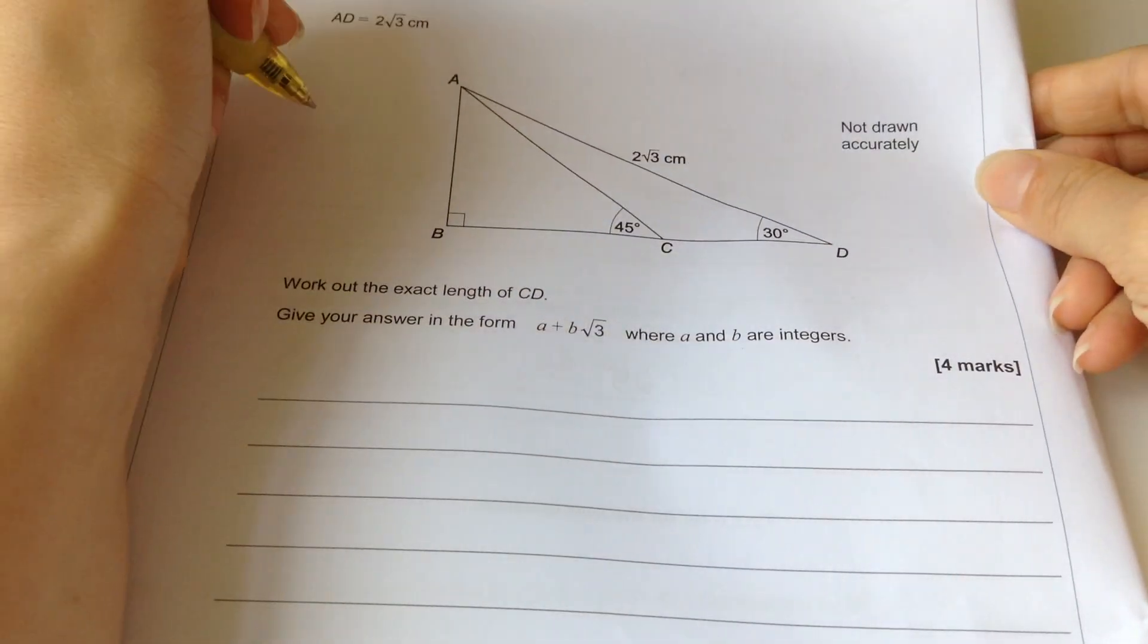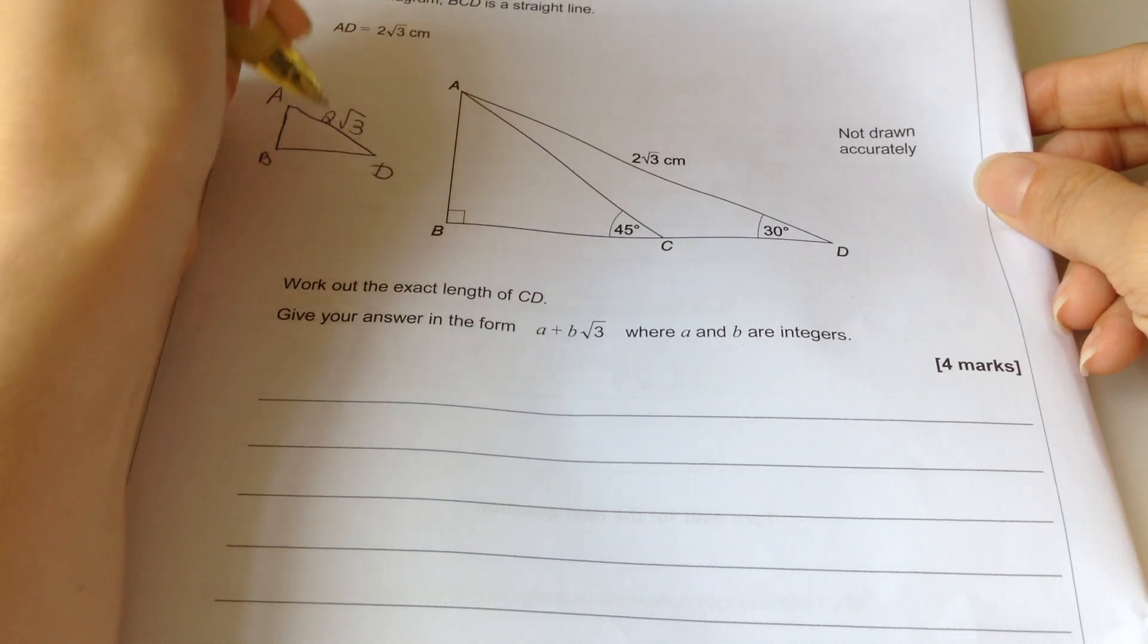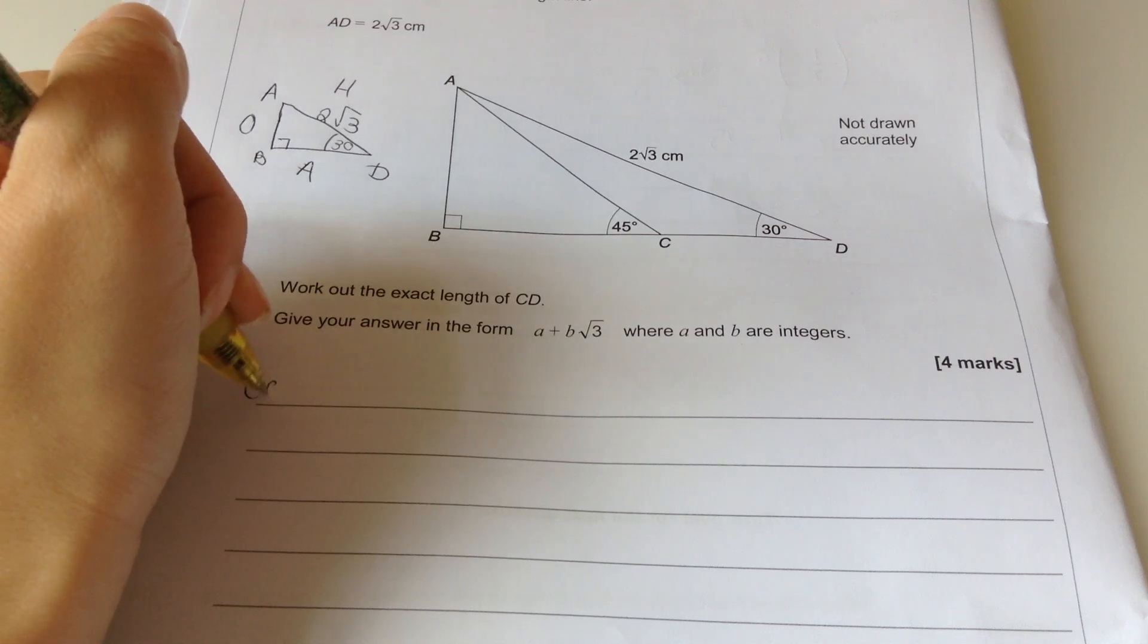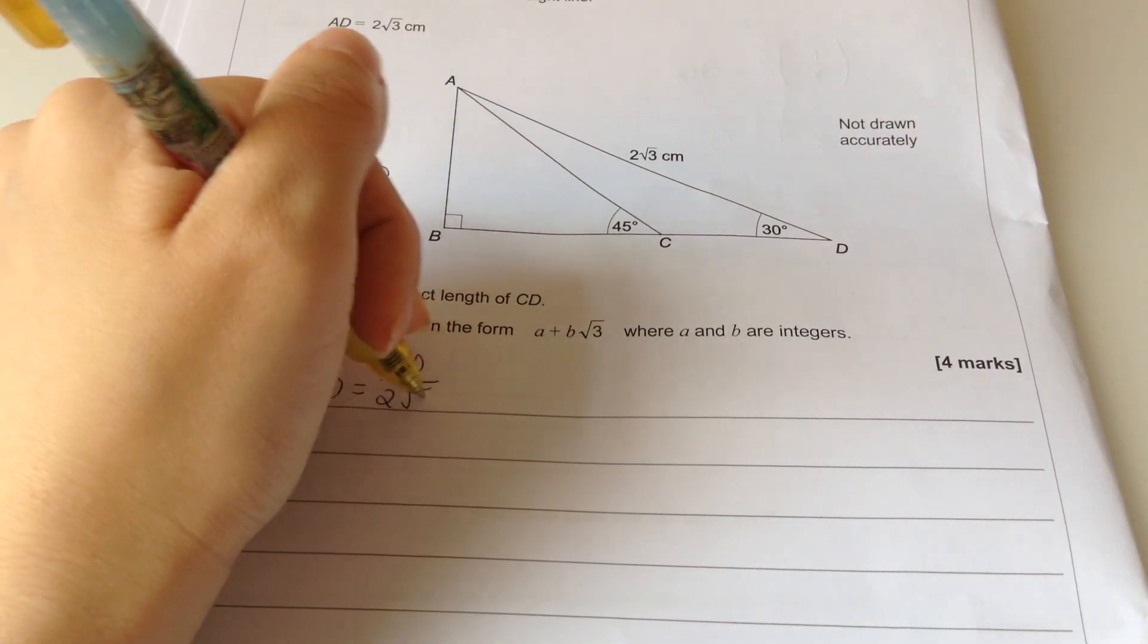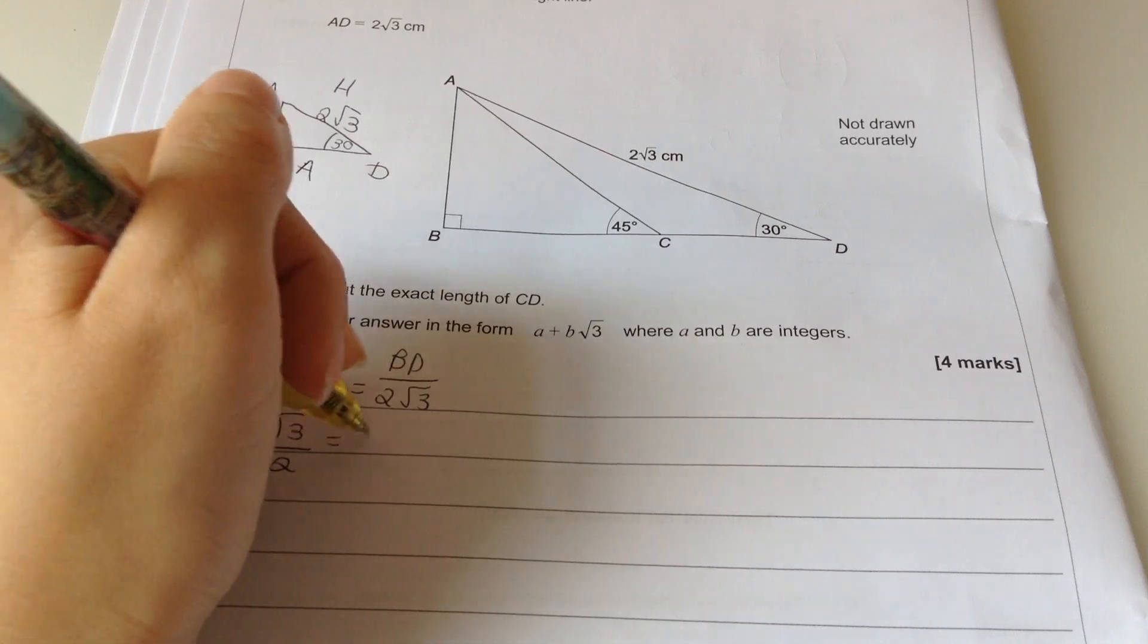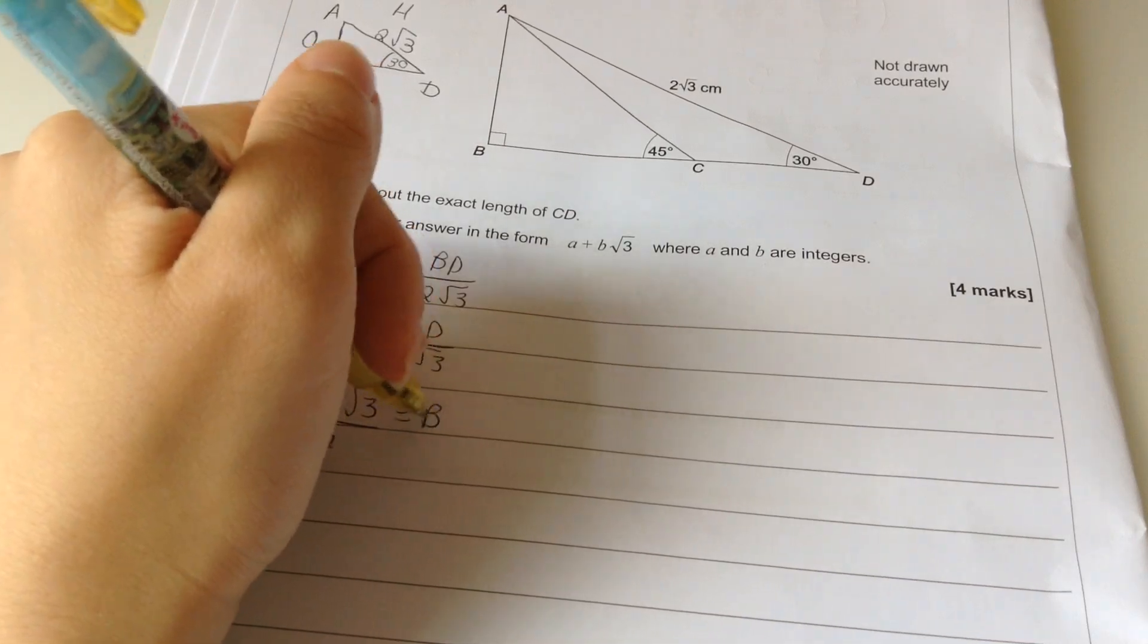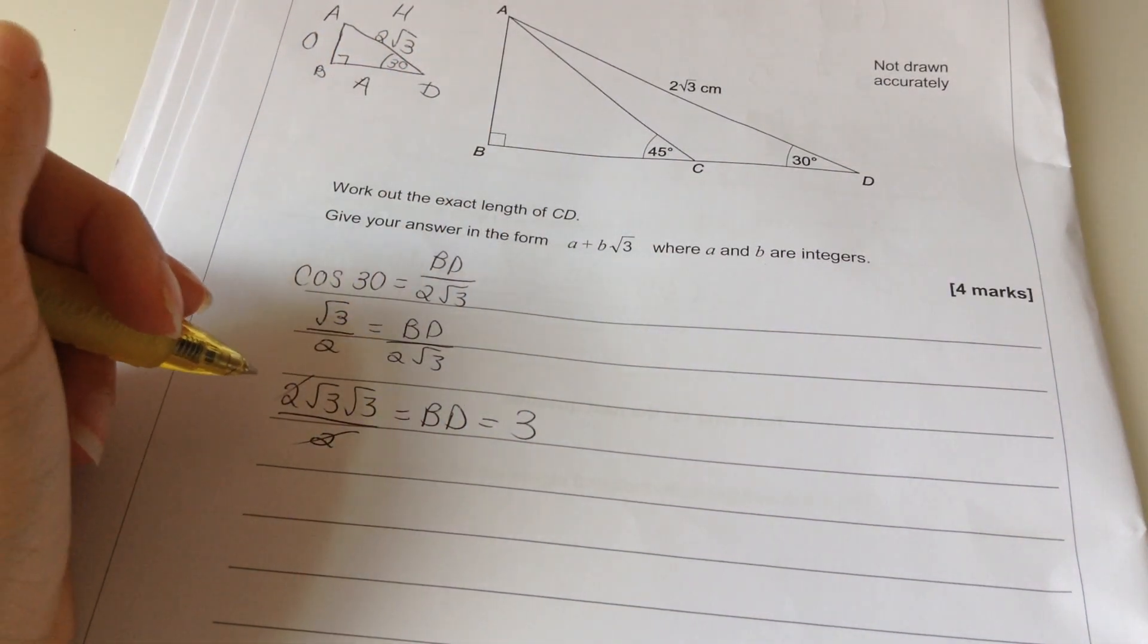So, I'm going to actually redraw this triangle, but just A, B, D. So, that's 2 root 3, that's 30. And I want this one, so that's H, A, O, so I'm going to use cos. So, cos 30 equals BD over 2 root 3. So, cos 30 is root 3 over 2. So, I've got that times by 2 root 3. 2 root 3 root 3 over 2 equals BD.